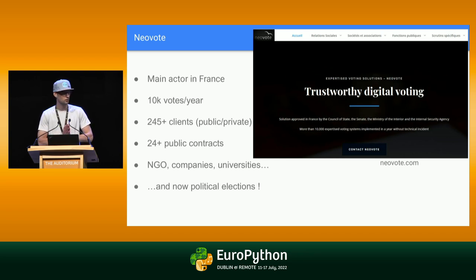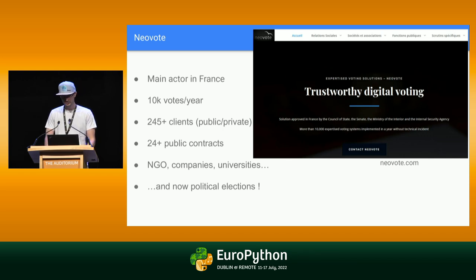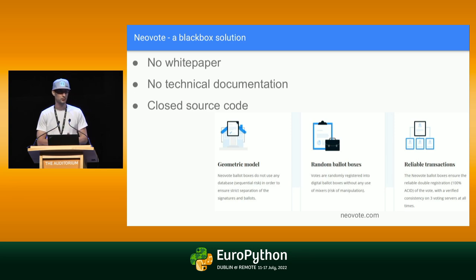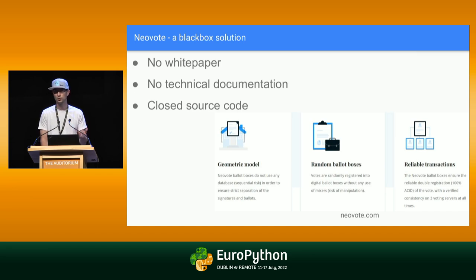Now we're going to talk about a company called Neovote. This company is basically the main actor in France for online voting. I guess they got a lot of clients with COVID-19 because plenty of people now want to vote online. They work for universities, plenty of companies, etc. Their software has been used for political elections — for primary party elections. That's when I started knowing them. The main issue with the software is it's a total black box: no documentation, no white paper, nothing. You cannot see the source code.